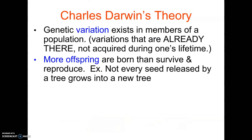Here's what he basically said: there's genetic variation, meaning the variations are already there. You don't acquire them during your lifetime. If you're a bird living on the beach, you're not going to turn tan to blend with the beach — you're born with whatever color feathers you're going to have. But genetically, some birds were lighter, some were darker, some had long beaks, some had short beaks.